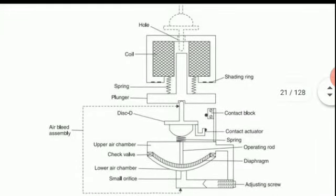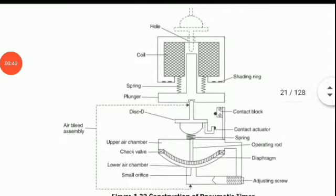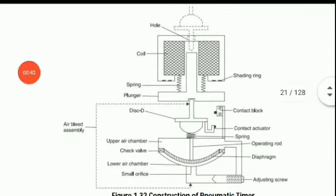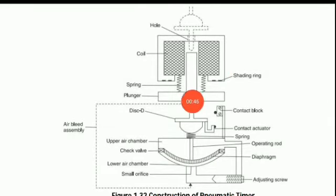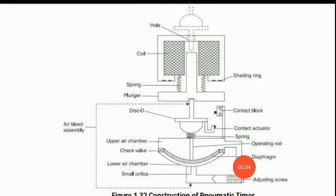Now we have a coil. We have a ring. We have a plank. We have a disc. We have a small air-bladed assembly.